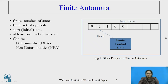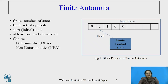Just look at the figure which explains the block diagram of finite automata. It has an input tape which is broken into cells. Each cell consists of a single input symbol, and a finite control unit along with a head which reads one cell at a time. It moves forward on the input tape.